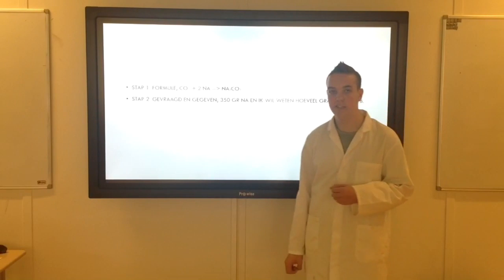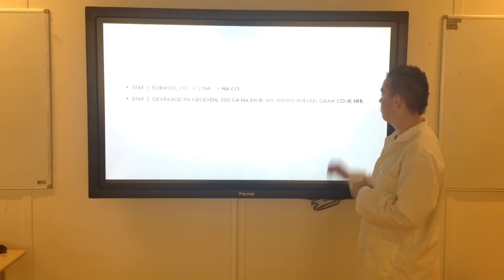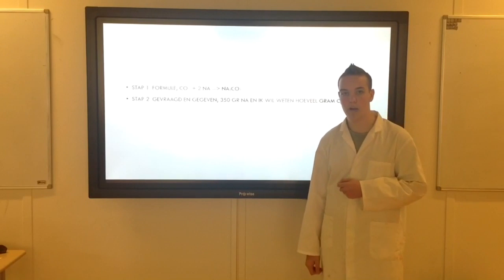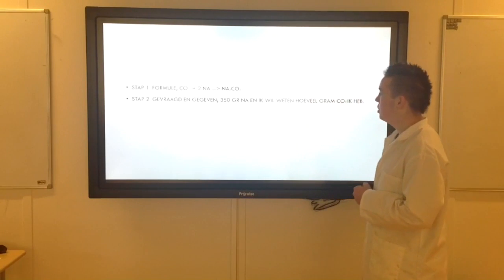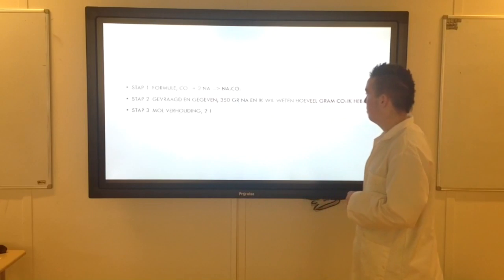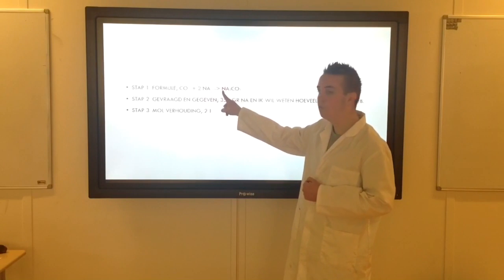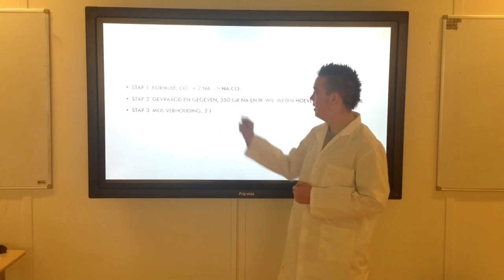Stap 2. Gevraagd en gegeven. We weten 350 gram. Weten we. We willen weten hoeveel CO3 we hebben. Dus dat gaan we ook uiteindelijk uitrekenen. Stap 3 is de molverhouding. We gaan kijken tussen natrium en tussen natriumcarbonaat. We weten hier staat een 2 voor. Hier staat niks voor. Dus een 1. 2 staat tot 1.